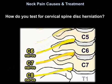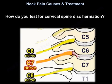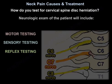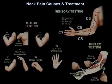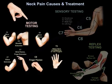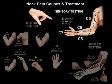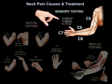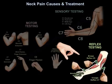How do you test for cervical spine disc herniation? You test the motor, the sensory, and the reflexes. This is how you test the motor strength of the nerve roots from C5 to T1. This is how you test the sensation, as you see here in this diagram. This is how you test the reflexes, as you can see here in this diagram.